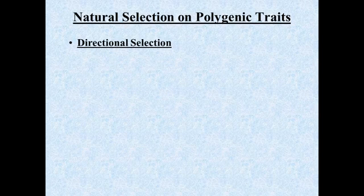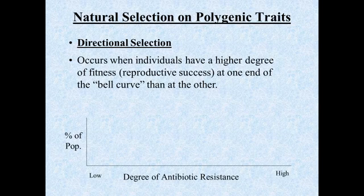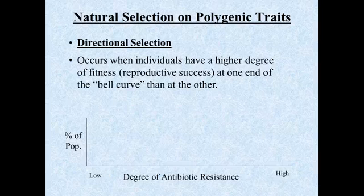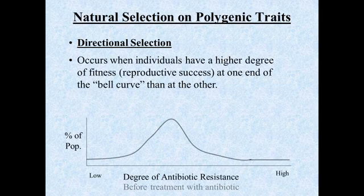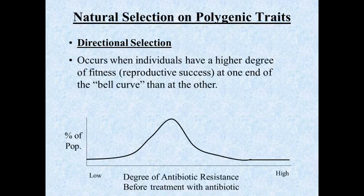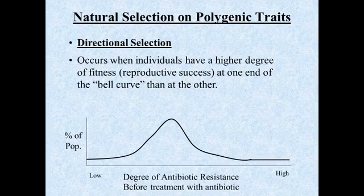The first one we're going to talk about is directional selection. In directional selection, individuals at one end of the curve have a higher degree of reproductive success than at the other end of the bell curve. One example we've talked about in class is the degree of antibiotic resistance. If we have a population of bacteria, there is some degree of resistance to an antibiotic, where some individuals have a high degree and some have a low degree of resistance.